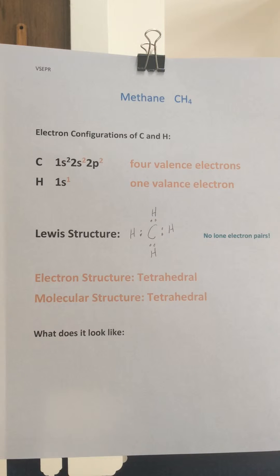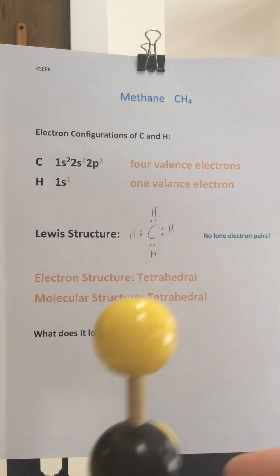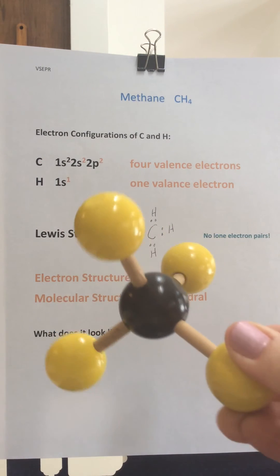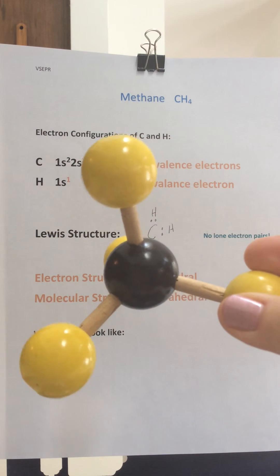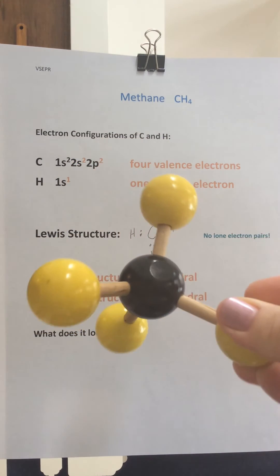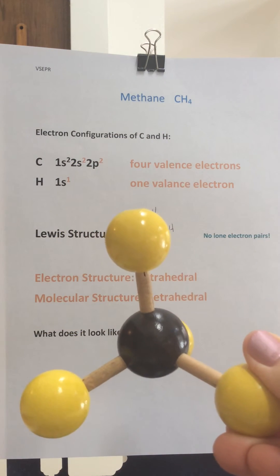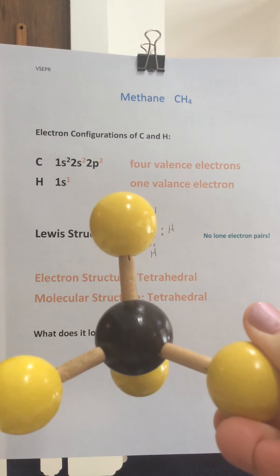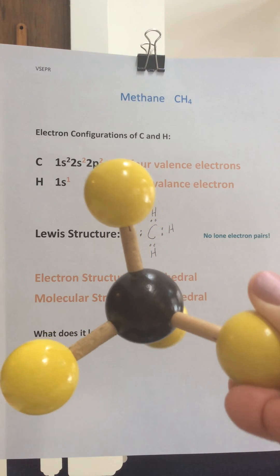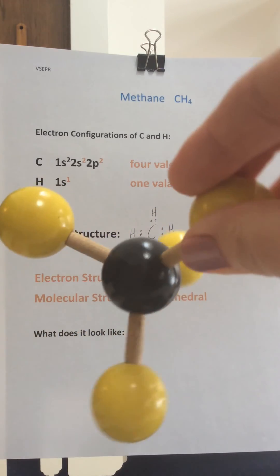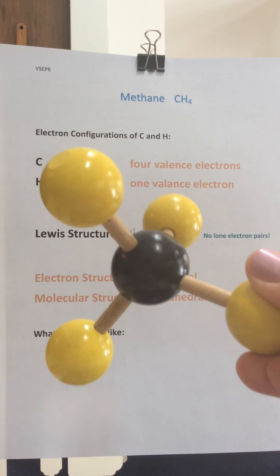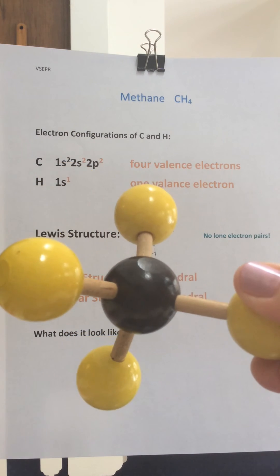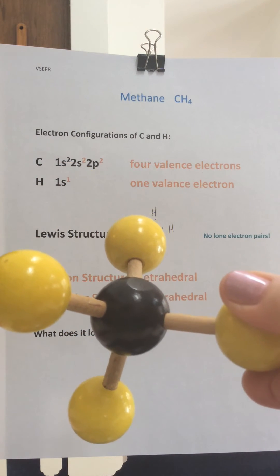It turns out that geometry is called tetrahedral. I'm going to show that to you right here. This molecule right here — can you see that? — it is methane. It's a ball-and-stick model of methane, and it's a tetrahedron. It has kind of three pointing down and one pointing straight up. You can rotate it around — it's very symmetric.